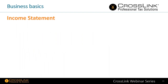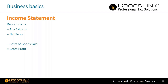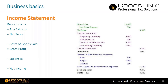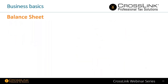Another business basic is the income statement. The formula is: start with gross income, subtract any returns to get net sales, subtract cost of goods sold to get gross profit, and then deduct expenses to arrive at net income. When your customers bring these to you, the formula on the left will look like an actual sheet being presented to you.